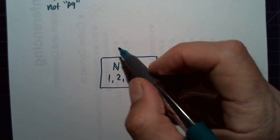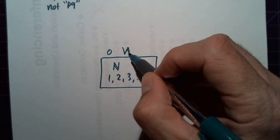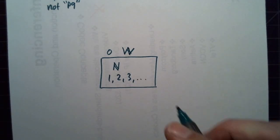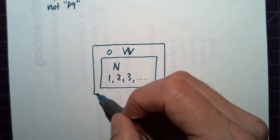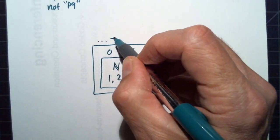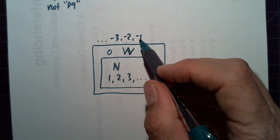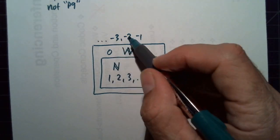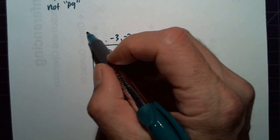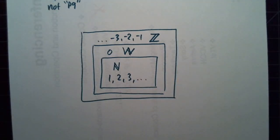If we include 0, 1, 2, 3, then these are called the whole numbers. If we include negative numbers — the negative natural numbers — so we have natural numbers, make them negative, include 0, and these are called the integers.